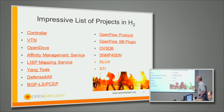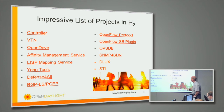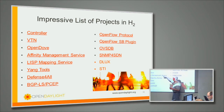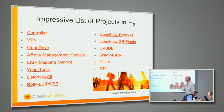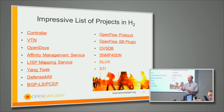There's a pretty impressive list of stuff in there. There was the controller, VTN — virtual tenant networking from NEC, Open Dove from IBM, the affinity management service from the Plexi folks. Truth in advertising: we don't have an abstraction layer in the controller that lets these things live together — you have to choose one. There is a new project proposing an abstraction layer, but it's not there yet. Some of this stuff is infrastructure, like Yang Tools. The thing is so heavily based on Yang models that Yang Tools itself is a project.